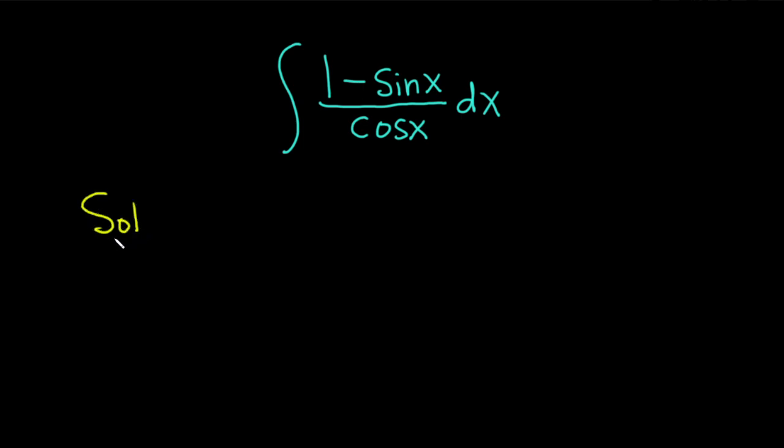Solution. So my first thought was to make a substitution to let u equal cosine x, but if you do that, then the derivative of cosine is negative sine, and that's not here because in the numerator we have 1 minus sine. So that's not really going to work. Another idea is to break it up as follows.